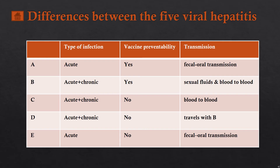Hepatitis A is an acute infection that fortunately has a vaccine, and the mode of transmission is fecal-oral — meaning we contract it from eating food or drinking water that has been contaminated with feces.